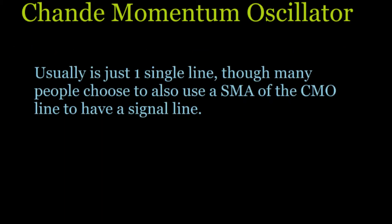Usually the Chande Momentum Oscillator is just one single line, but a lot of people will also plot the simple moving average of that CMO line and treat it as a signal. I'm going to show you an example of both — just the single line and also the simple moving average line. But first, let me show you the calculations.